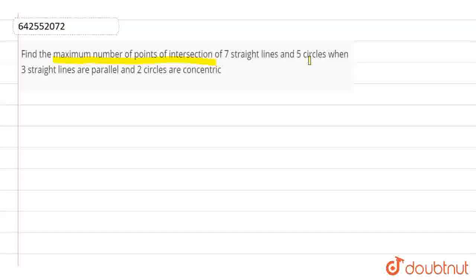We have 3 straight lines which are parallel and 2 circles which are concentric. Now let's try to solve it. We will find out, first of all, the intersection points between lines.